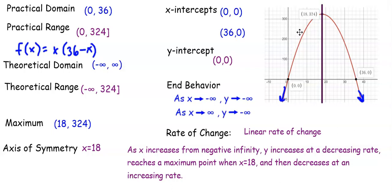So as x increases from negative infinity, y increases at a decreasing rate, reaches a maximum when x is equal to 18, and then decreases at an increasing rate, which is why this curve continues to get steeper. So this is an example of the key features and their interpretations for this problem.